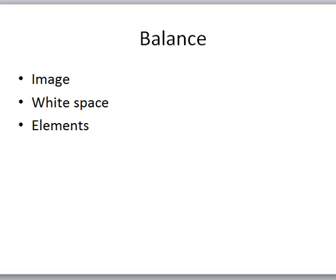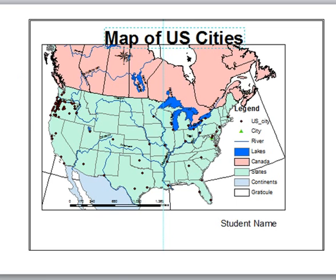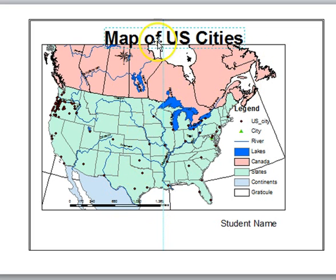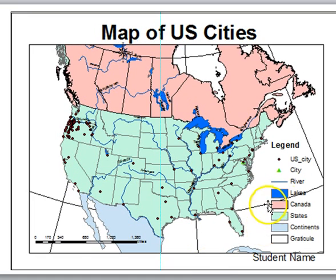One thing to think about is balance — balance of the image, white space, and balance of the map elements. Here's an example of a map that's not very well balanced. The margins are uneven; there's a lot more space on one side than the other. The whole North America is pretty heavy over to the left side of the map, and the student name is kind of floating down there. The focus of the map — cities of the U.S. — needs to be more in the center, with the same amount of margins on either side.